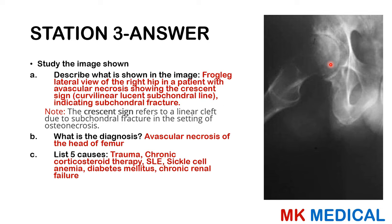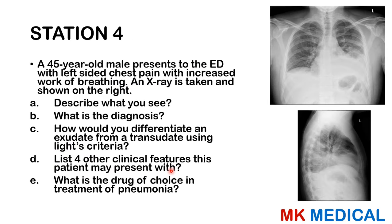We can see a crescent sign, which is a curvilinear lucent subchondral line — just beneath the cartilage — that signifies a subchondral fracture. This is a linear cleft occurring in the setting of osteonecrosis, i.e., avascular necrosis of the head of the femur. Causes include trauma, chronic corticosteroid therapy, systemic lupus erythematosus, sickle cell anemia, diabetes mellitus, and chronic renal failure.